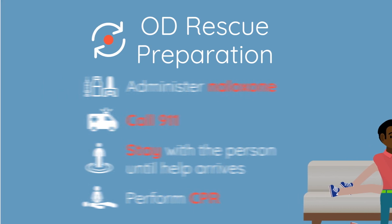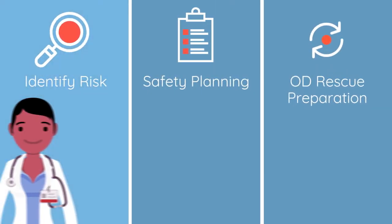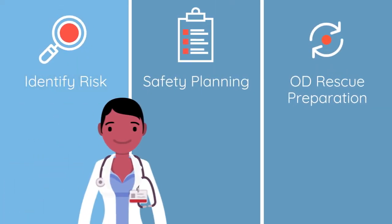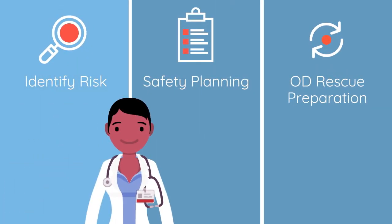In summary, this video has focused on the identification of opioid overdose risk factors, safety planning, and overdose rescue preparation as an essential triad of strategies to avert or reduce the risk of an opioid overdose among patients being treated for an opioid use disorder.